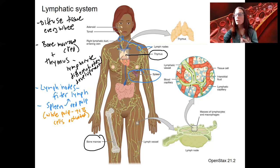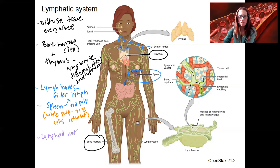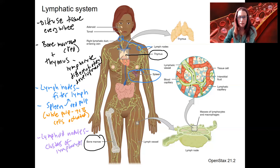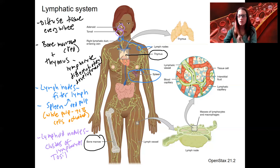Now we've got lymph nodules — different than nodes. Lymph nodules, or lymphoid nodules, are clusters of lymphocytes in a capsule. These are located various places throughout the body. One example is the tonsils — the tonsils are a type of lymphoid nodule. Your adenoid as well. You know your tonsils swell when you get sick, so they're involved in mounting an immune response. One other type of lymphoid nodule is MALT.